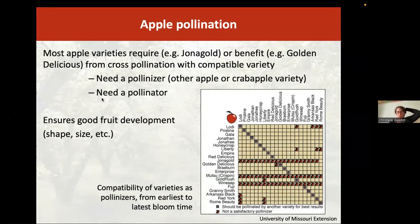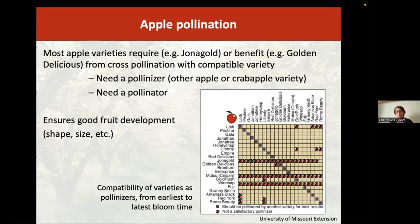Going back to cross-pollination: when you have apple, you will need a different variety, what we call a pollinizer. Different varieties require or benefit from having cross-pollination with a pollinizer—another variety of apple or a crab apple that can pollinate the variety you're trying to grow. You can see on this table what is most compatible as a pollinizer for your apple variety. You also need a pollinator—a bee in this case—to ensure good fruit development.